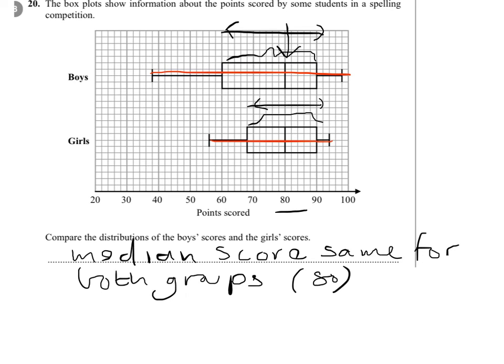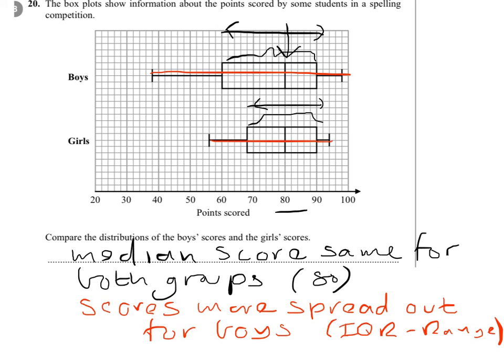So the scores are more spread out for boys than girls, and we need to write that down. This is indicated by the interquartile range and the range. So two separate points for two marks.